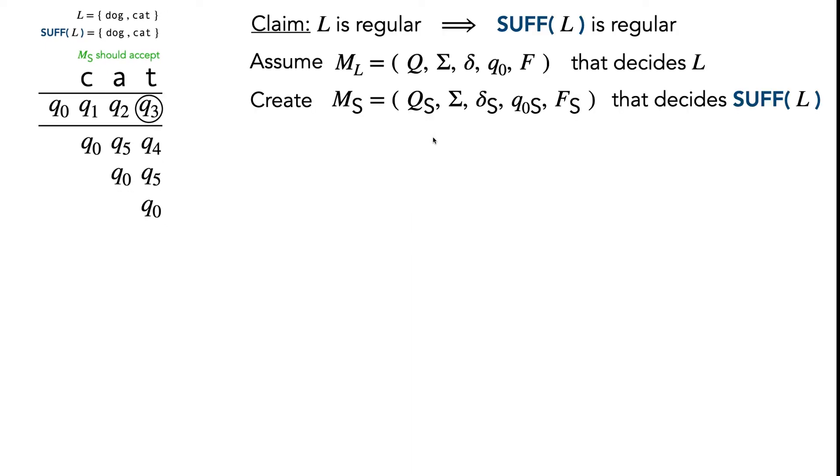Hopefully with the intuition we've gained from doing these examples, we can now formally specify our 5-tuple for the DFA M_S. This means we've got to specify a new set of states, a new transition function, a new start state, and a new set of accepting states. Let's start off with Q_S, the set of new states.